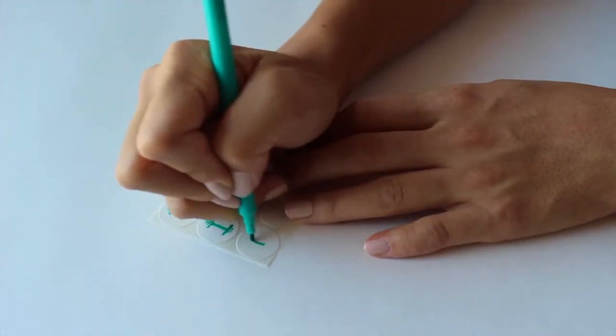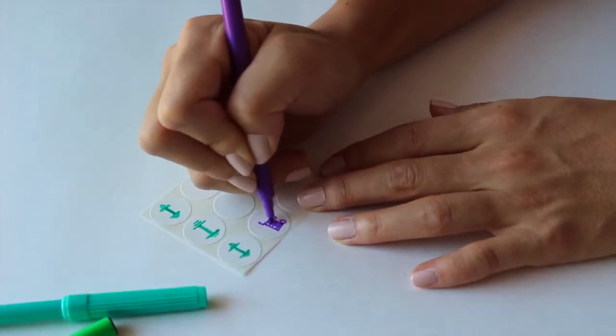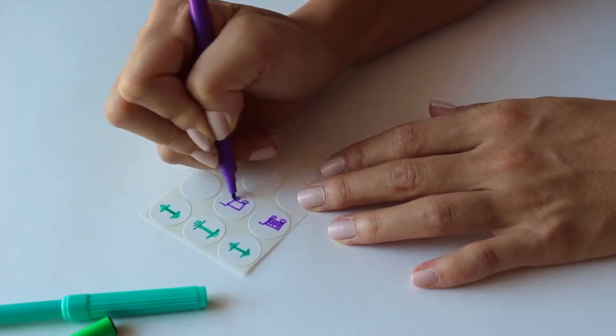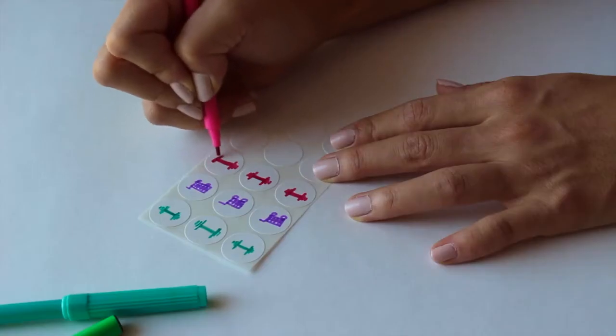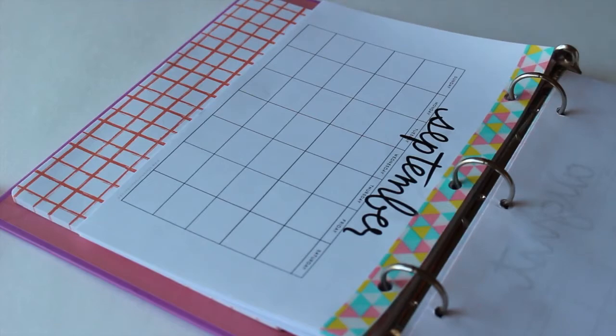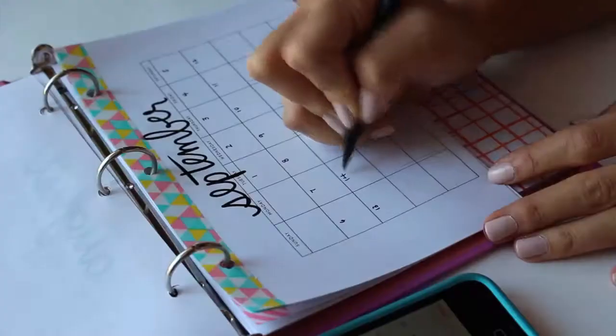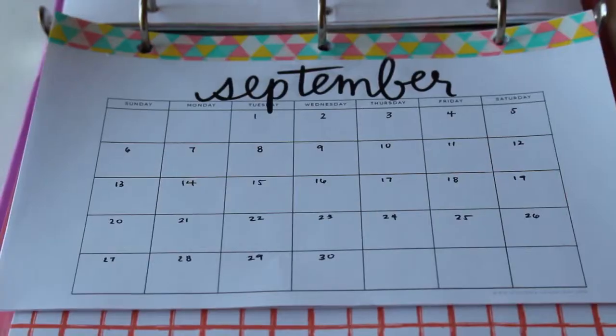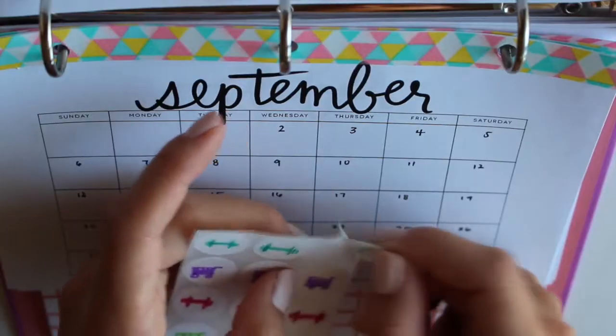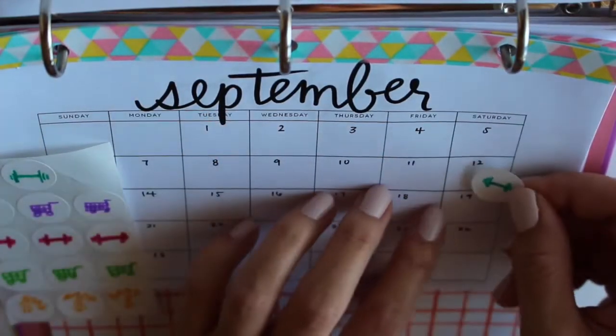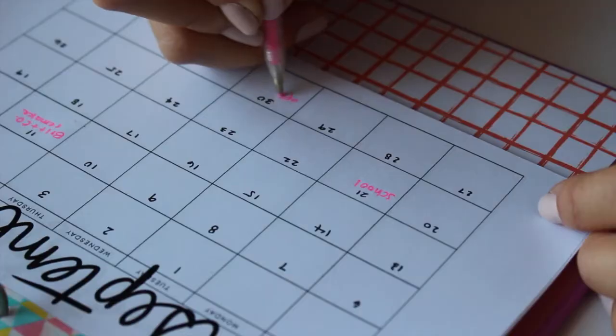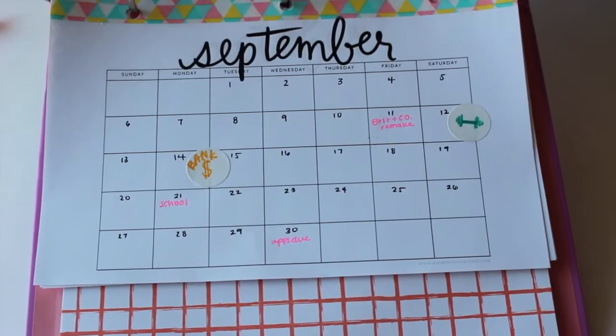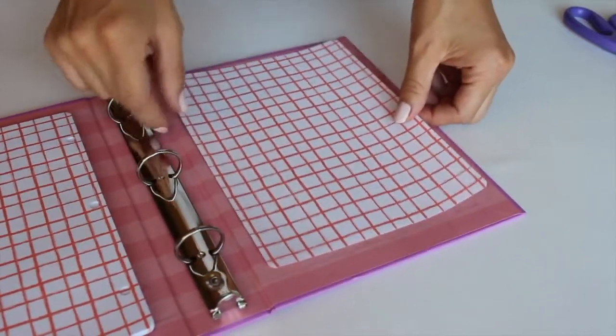I drew some dumbbells for workout reminder stickers as well as some shopping carts so that I could remind myself when I have to run some errands. Then I did a few dollar signs to remind myself when to go to the bank. These are really easy—you don't have to write like 'go to the bank' or 'go shopping,' you just take a sticker and put it on your calendar. They're super cute and useful, really colorful and nice and totally practical.